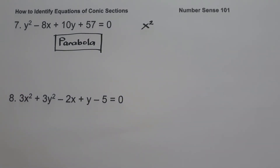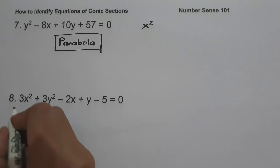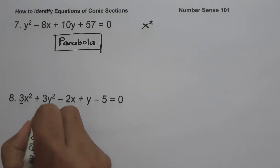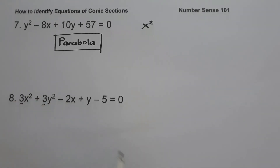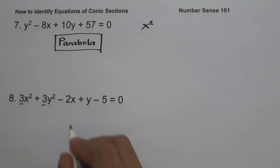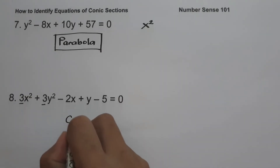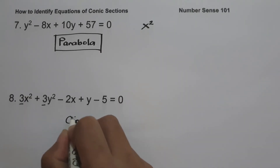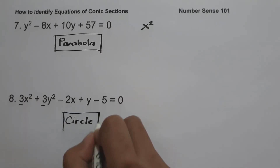On number eight, we have 3x² + 3y² − 2x + y − 5 = 0. Since the coefficient of x² is equal to the coefficient of y², we can say that this equation is a circle.